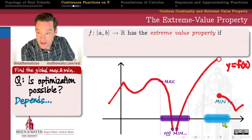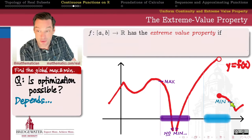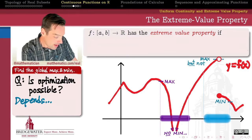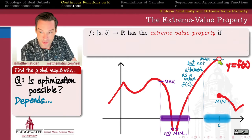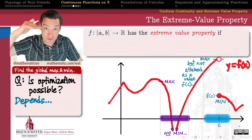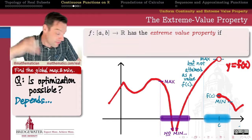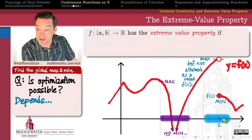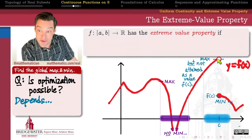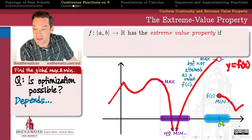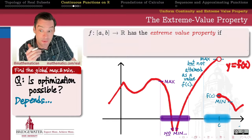Similarly, if I pick this other domain over here, I'll be able to identify a global minimum on that domain. But if I look for a global maximum, I'll try to look at the very top of this piece of the graph — the problem is this piece of graph doesn't really have a top; it's got this little open circle up here. So even though the values are bounded from above, this maximal value is not actually attained as f of c for any c in my domain. There is an upper bound, even a least upper bound, but it is not attained — so it's not what we call attained.